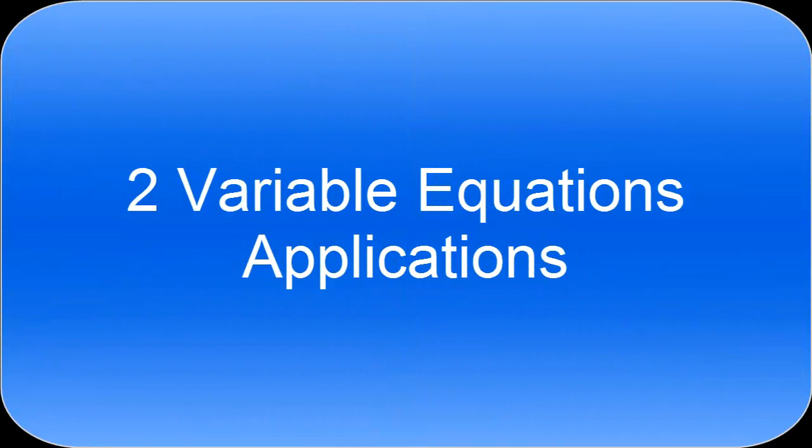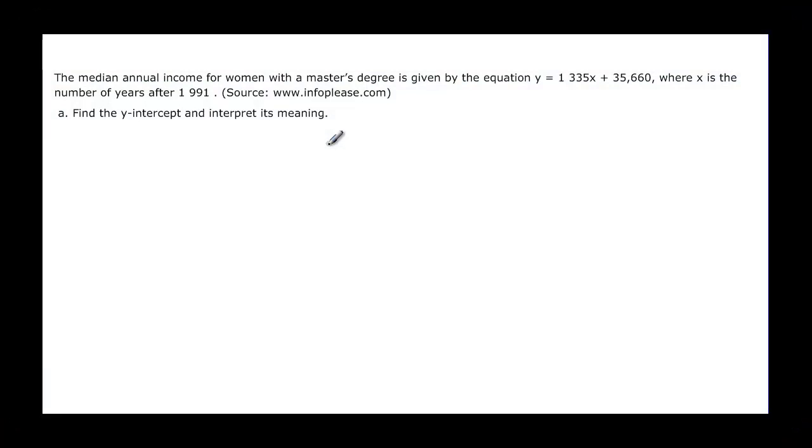We're going to continue looking at linear equations with two variables and talk about some applications. The median annual income for women with a master's degree is given by the equation y equals 1335x plus 35,660, where x is the number of years after 1991.